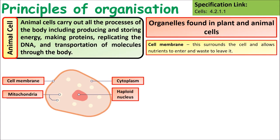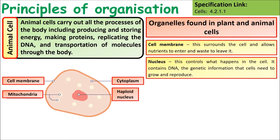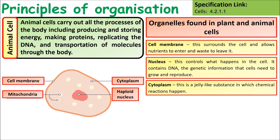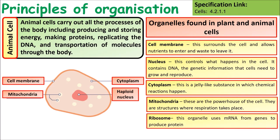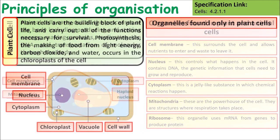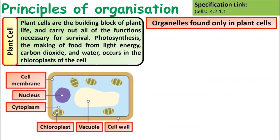Reminding ourselves of animal cells: the cell membrane controls what enters and leaves the cell; the nucleus controls cellular activity; the cytoplasm is where chemical reactions take place; mitochondria is where respiration occurs, providing energy for the cell; and ribosomes are organelles used to make protein.